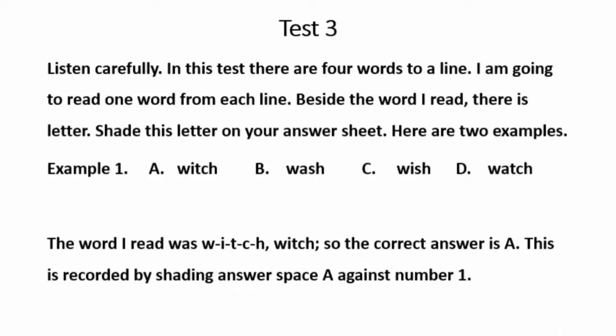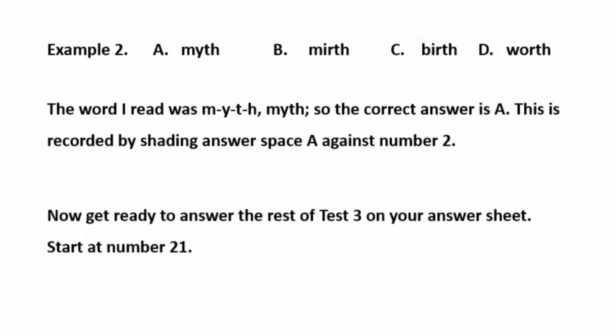Test 3. Listen carefully. In this test, there are four words to a line. I'm going to read one word from each line. Beside the word I read, there is a letter. See those letters on your answer sheet. Here are two examples. Example 1. Which. The word I read was W-I-T-C-H, which. So the correct answer is A. This is recorded by shading answer space A against number 1. Example 2. Myth. The word I read was M-Y-T-H, myth. So the correct answer is A. This is recorded by shading answer space A against number 2.